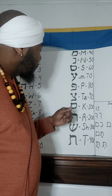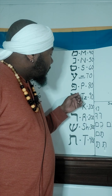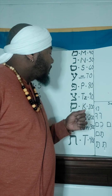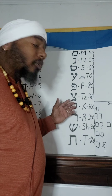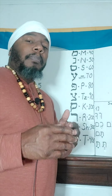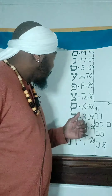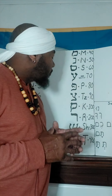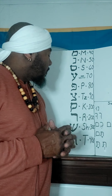The next letter is the Sade. In the English, it will be like a TZ or a TS. And the numeral equivalent to that is ninety. The next letter is the Kuf. In the English equivalent, it is K and also it could be Q. The numeral equivalent is the number one hundred. The next letter is the Resh. The English equivalent is the letter R. And the numeral equivalent is two hundred.